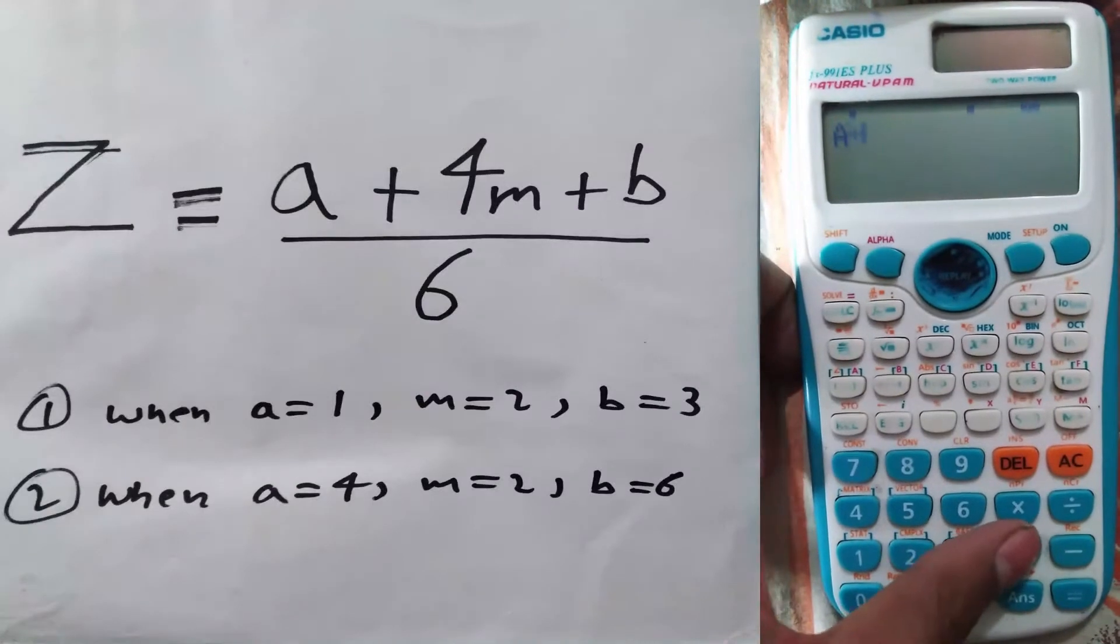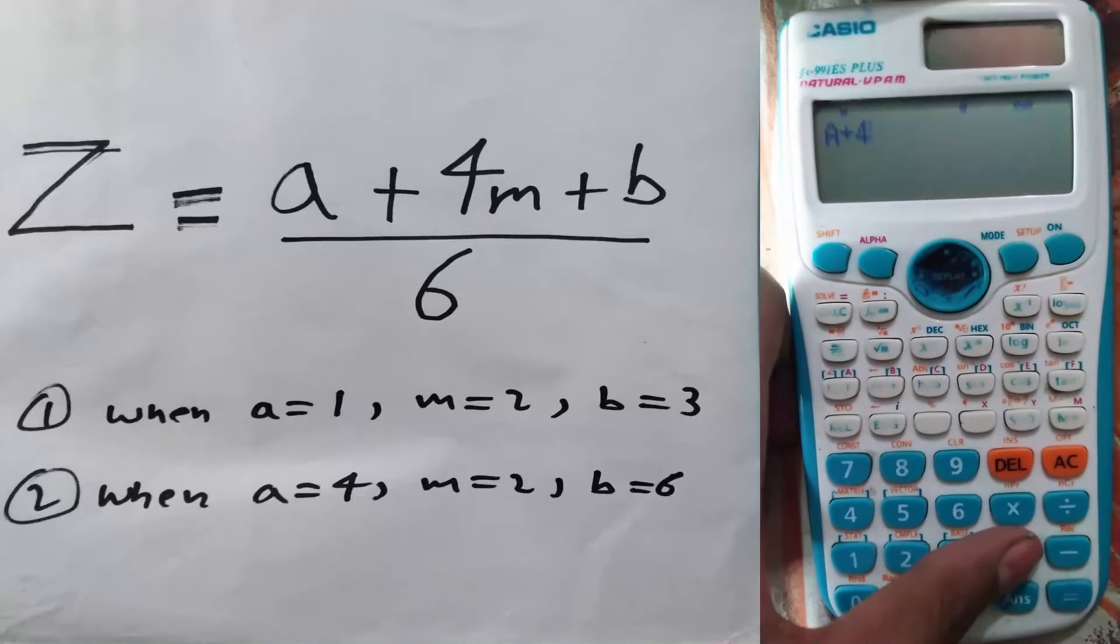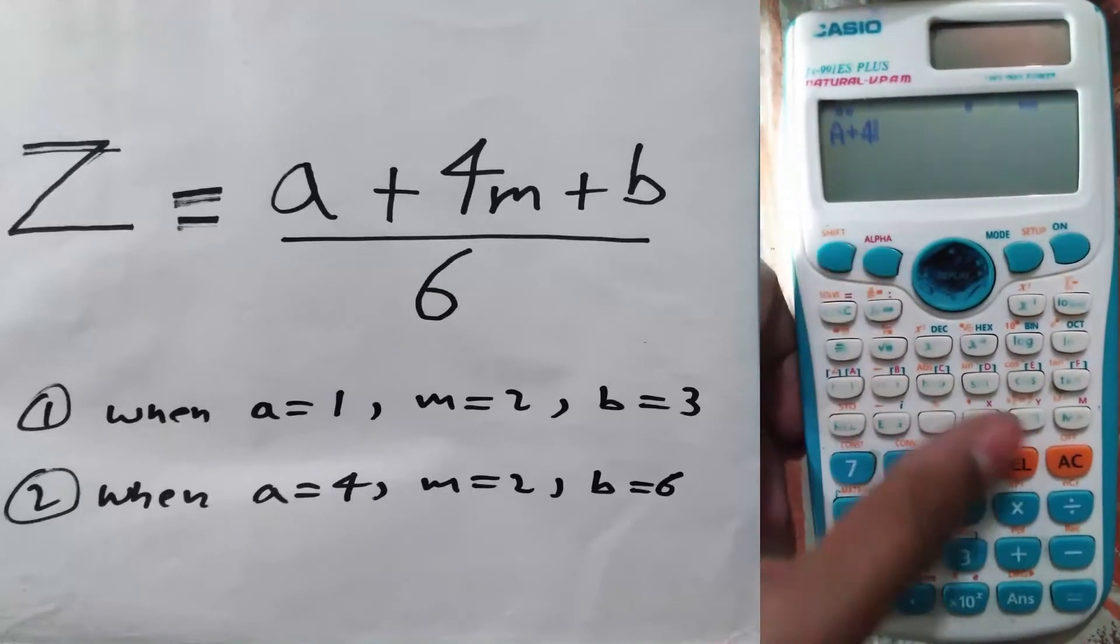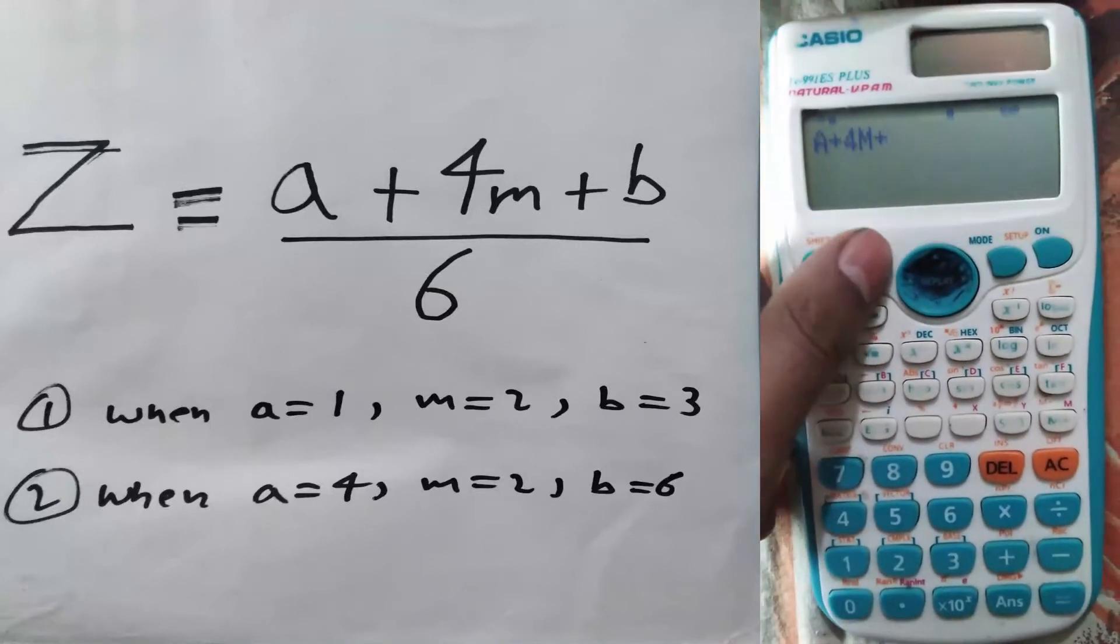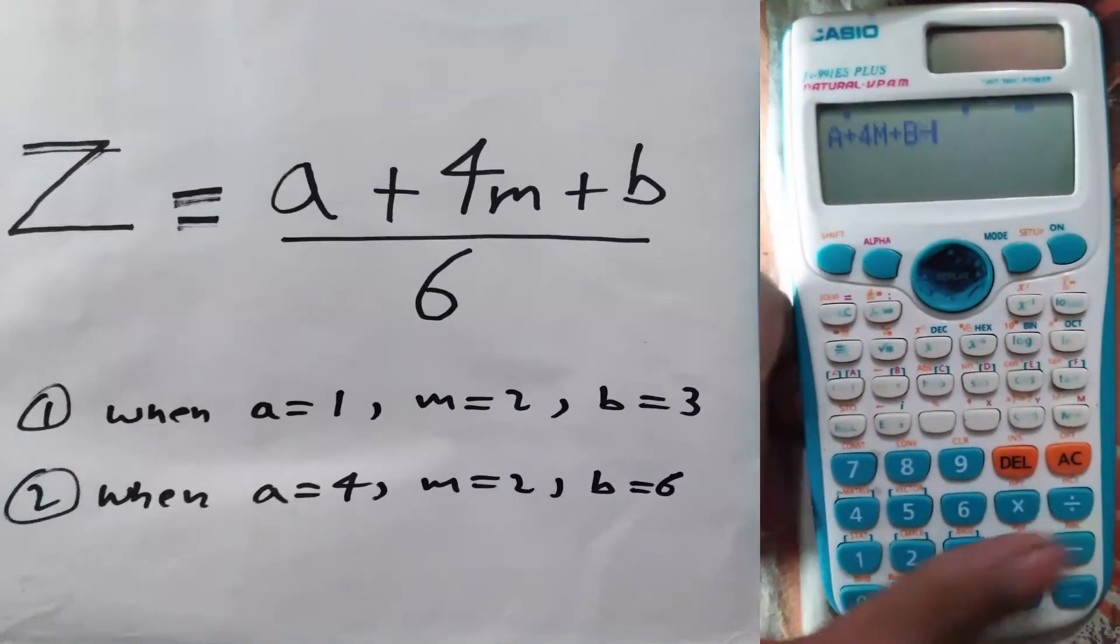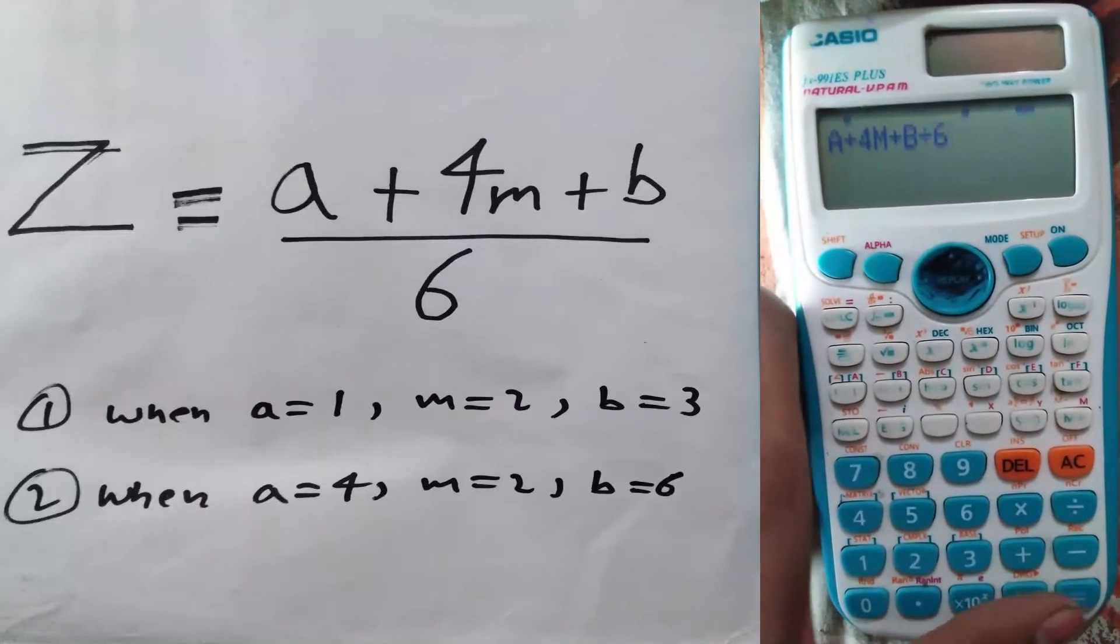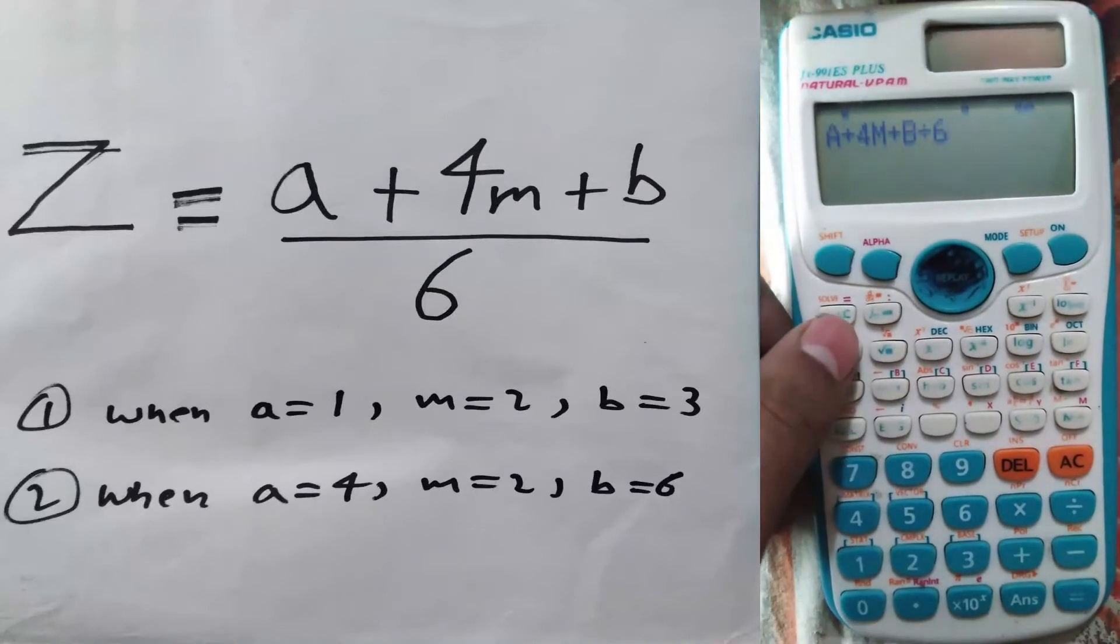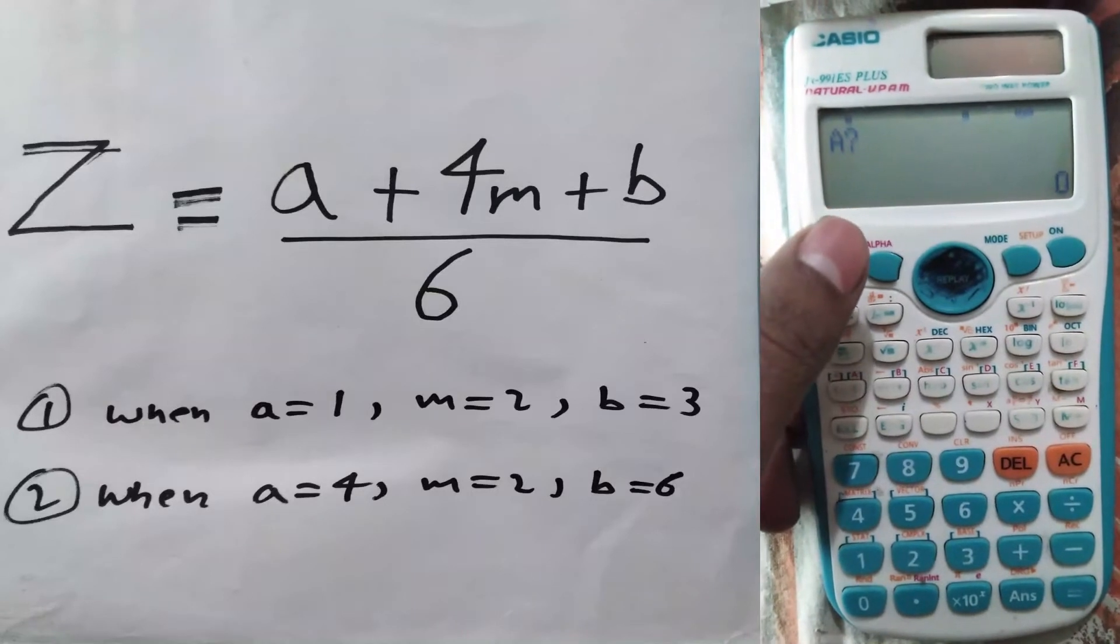Plus alpha m, plus alpha b, divided by 6. And we will not press equals. We will press this calculation button, and it is asking for a.